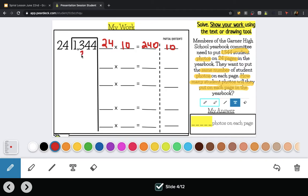So now I have to subtract 1,344 photos minus 240 photos. So that's if I put 10 photos on 24 pages and that leaves me with 1,104 photos.